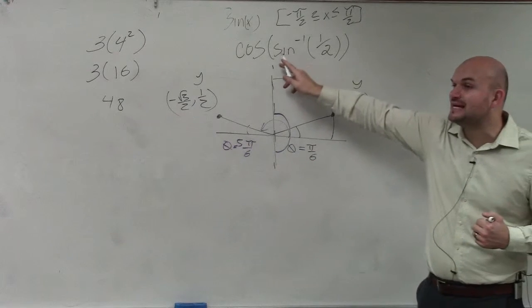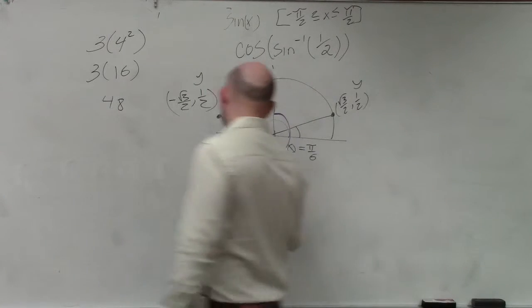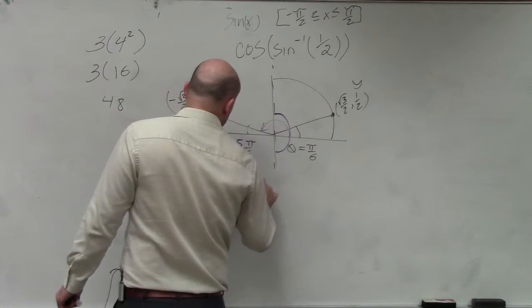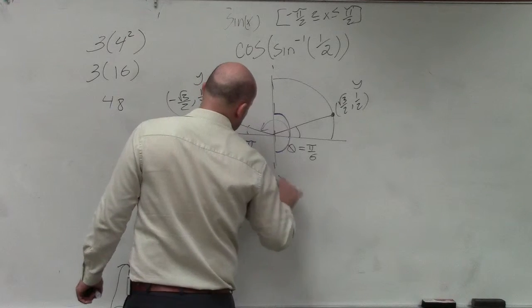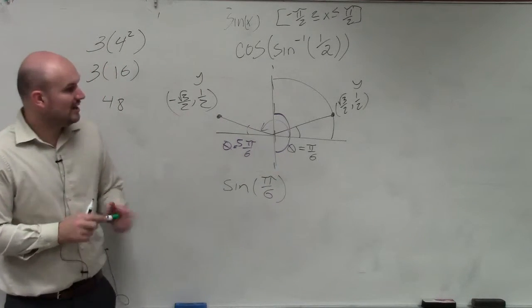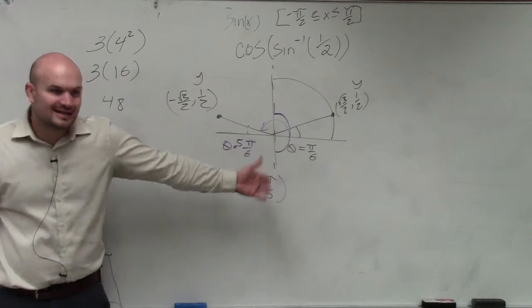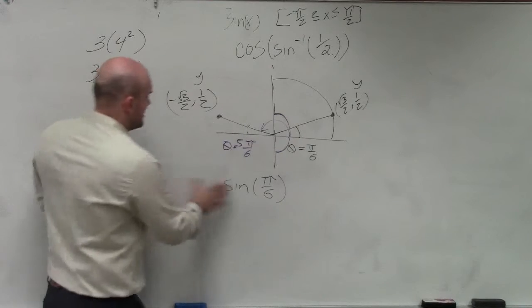So now I replace sine inverse of 1 half as pi over 6. So I write sine of pi over 6. Still not done. Now, what is the sine of pi over 6? Well, this is what we did before. Again, I'm sorry, it's cosine of pi over 6, right?